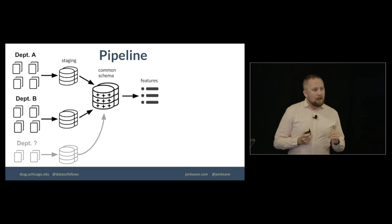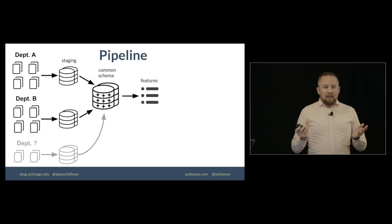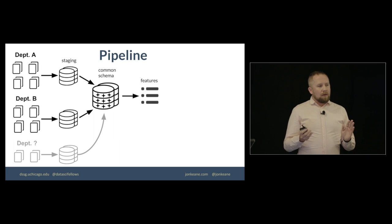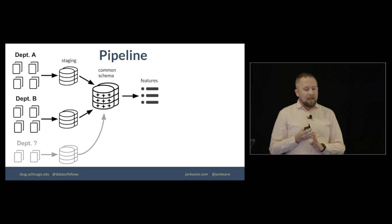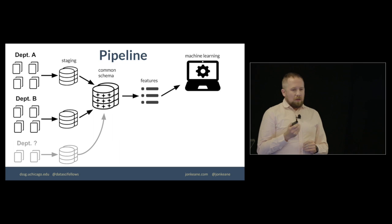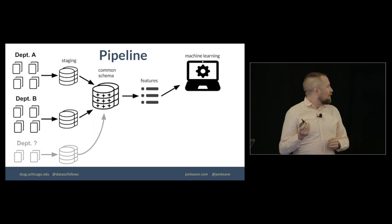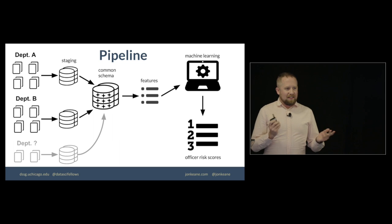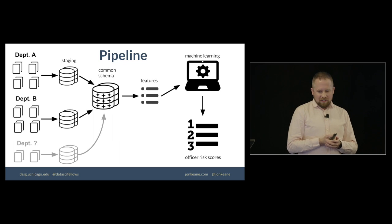So from this, we can then generate a bunch of features. These were generally those officer characteristics, which were fairly static. And we also did look back windows. So we'd say, how many arrests did you make in the last week? How many car chases were you in in the last week, last year, et cetera? We put those into a machine learning model. The machine learning model did things that were fancy. And then we got a list of officers ranked by their risk scores.